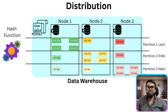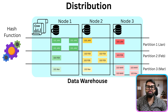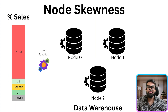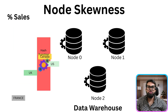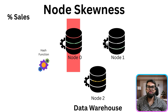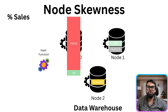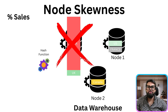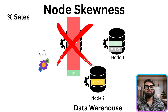Choosing the right distribution key is important — it helps balance the data and prevent node overload. Consider this: you have a region column and your e-commerce application operates in 5 regions: India, US, UK, France and Canada. If 80% of your sales come from India and you chose region as your distribution key, then 80% of your data gets skewed to one node. That is not good for your data warehouse performance, because one node is doing 80% of the work while the other two nodes are only doing 20%. Proper data distribution across all nodes is very important in any distributed system like a data warehouse.